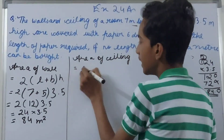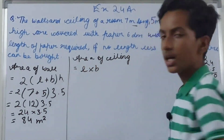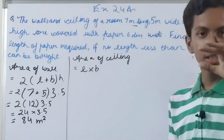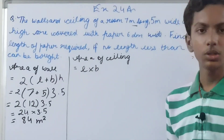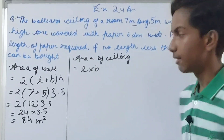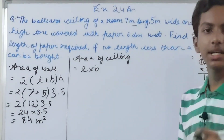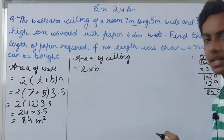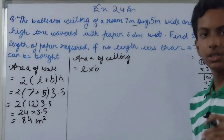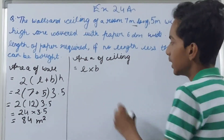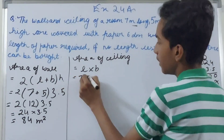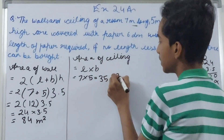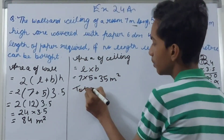Now we find the area of the ceiling. The ceiling area is simply length × breadth, because it is one flat surface. We do not use the height here. So the area of ceiling = 7 × 5 = 35 square meters.